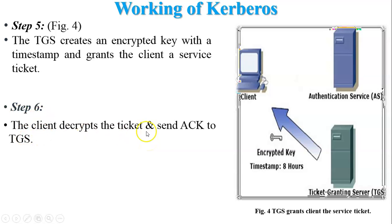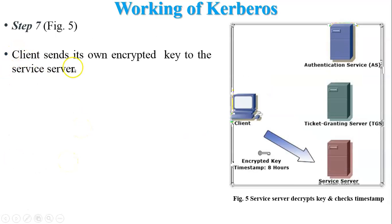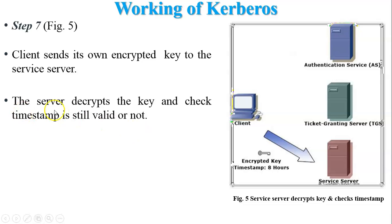Step 6: The client decrypts the ticket and sends an acknowledgement to the TGS. Step 7: The client sends its own encrypted key to the server. There are three entities: the Authentication Server, the Ticket Granting Server, and the server the client actually wants to communicate with to access services. The client provides their encrypted key (with timestamp included) to the server. The server decrypts the key and checks whether the timestamp is still valid. If the timestamp is not valid, the server cannot communicate with the client; if valid, communication begins.